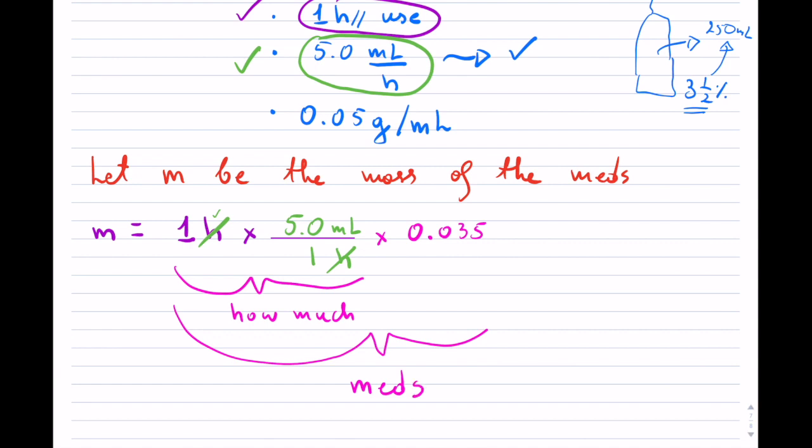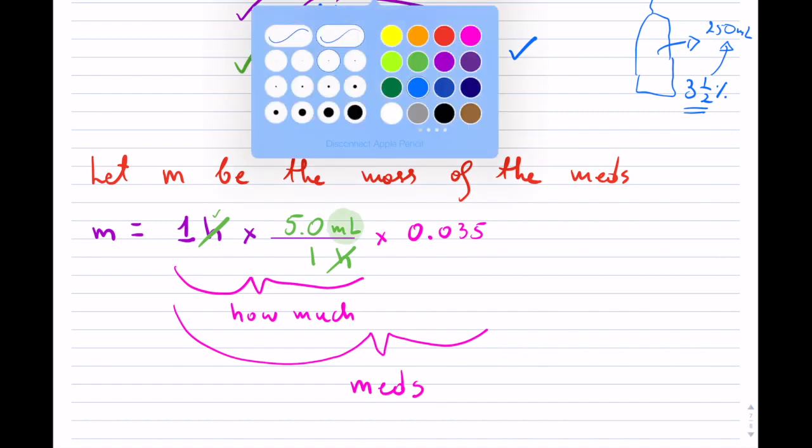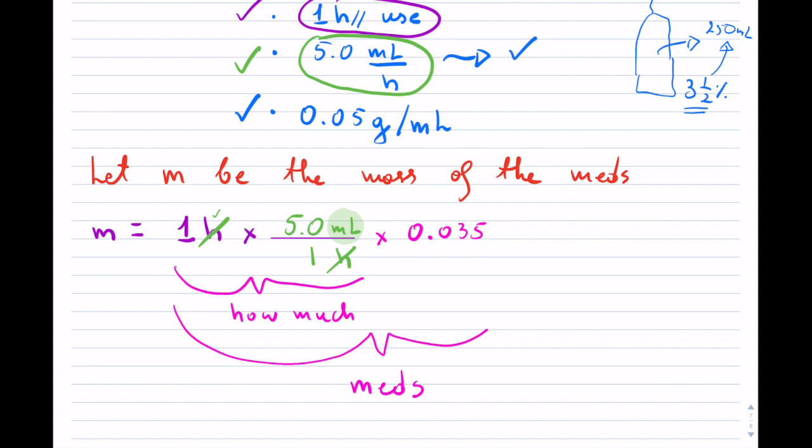So notice I still have milliliters and that's where the last given comes in, because now I can multiply and I want to know how many grams they have taken in. And that is per every 1 mL. And that mL will cancel off this mL and all I have left is the grams.